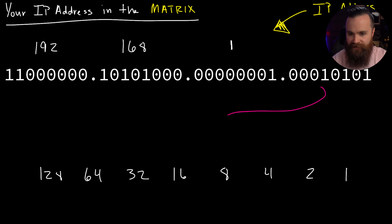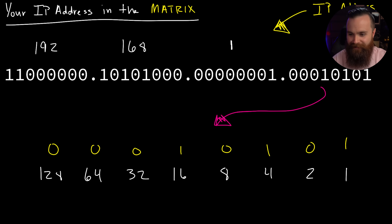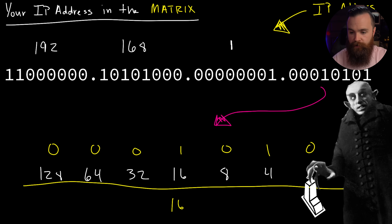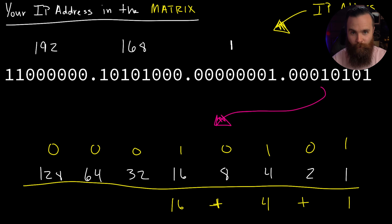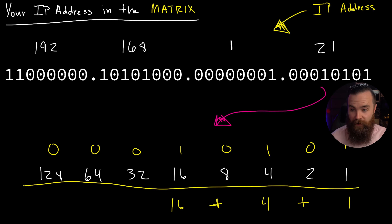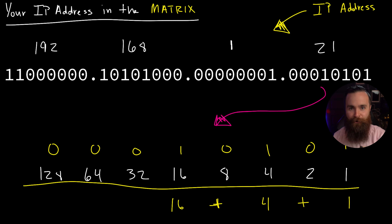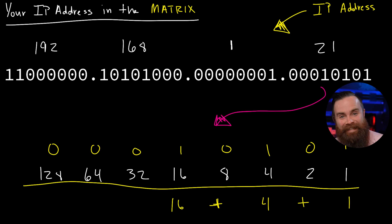And finally the last octet. Bringing it down and matching up our binary to our chart: 0, 0, 0, 1, 0, 1, 0, 1. We bring down 16, bring down 4, bring down 1. 16 plus 4 is 20, plus 1 is 21. That's our IP address! We just converted our entire IP address from Matrix code, from binary to decimal. How cool is that? If you don't think that's cool, drink some more coffee and rewatch it.